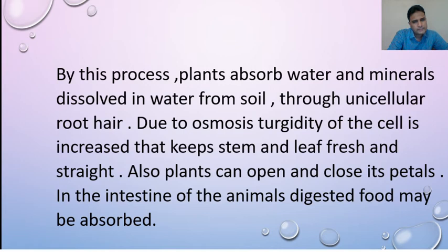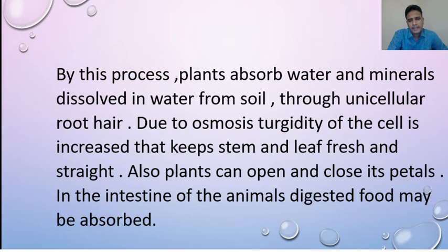By this process, plants absorb water and minerals dissolved in water from soil through unicellular root hair. Due to osmosis, turgidity of the cell is increased, which keeps stem and leaves fresh and straight. Plants can also open and close their petals. In the intestine of animals, digested food may also be absorbed by this process.